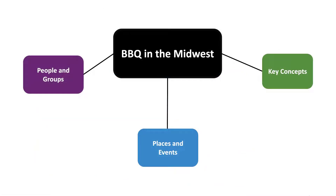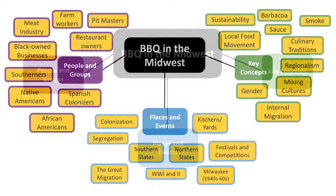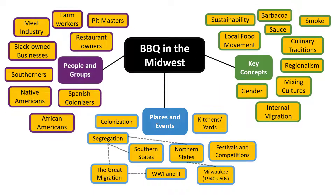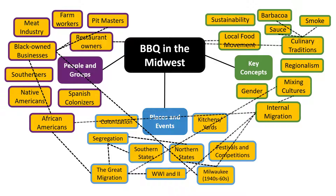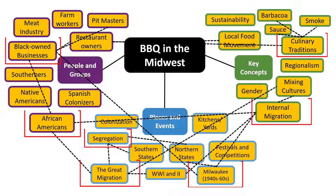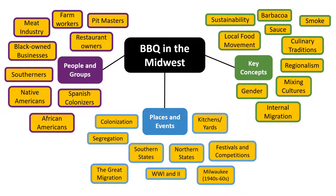I've chosen these thematic groupings because people and groups, places and events, and key concepts are all different ways I can get specific about my topic. After mapping out my ideas, I'll look for concepts that are interrelated and specific. I'll keep drawing connections between ideas until I've found a subtopic that has connections across all the mind mapping categories. These well-defined areas of my mind map can help me develop a topic or research questions focused enough for college-level research and writing.